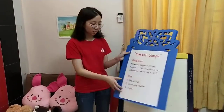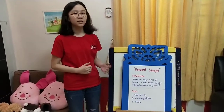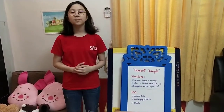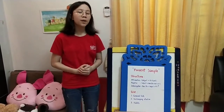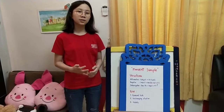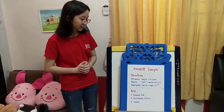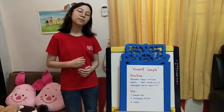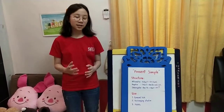First, let's learn about present simple. The structure of present simple tense in affirmative form is: subject plus verb 1 (s/es). In negative form: subject plus do/does plus not plus verb 1. In interrogative form: do/does plus subject plus verb 1, question mark.